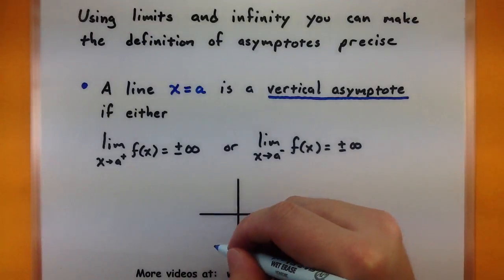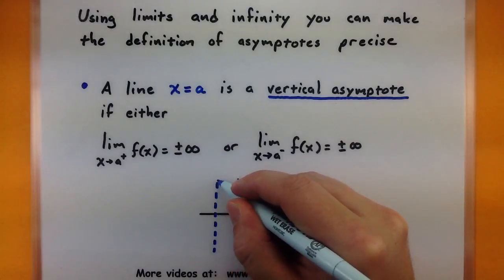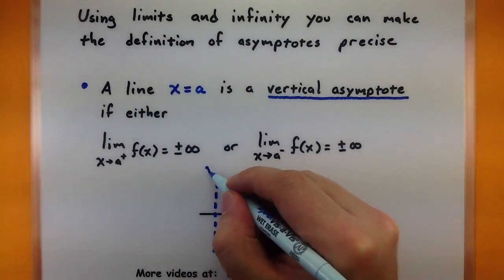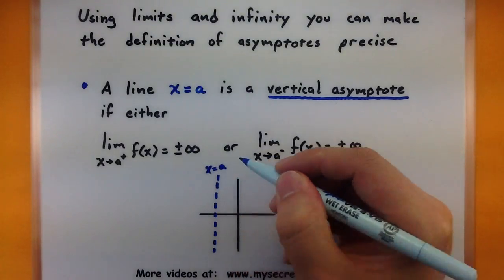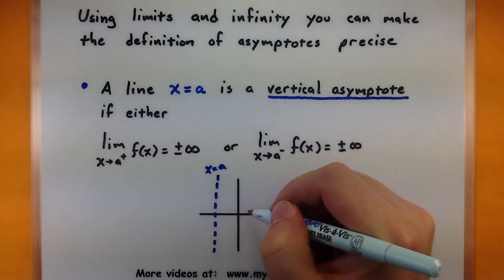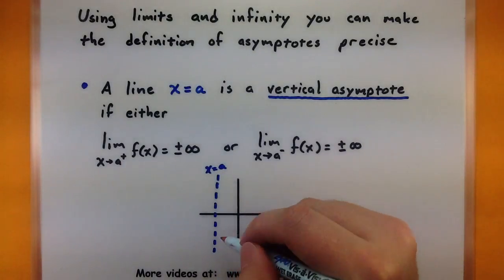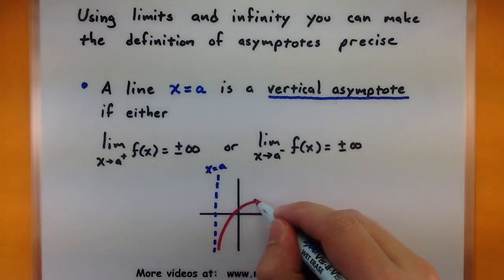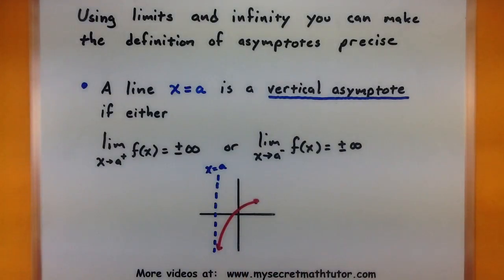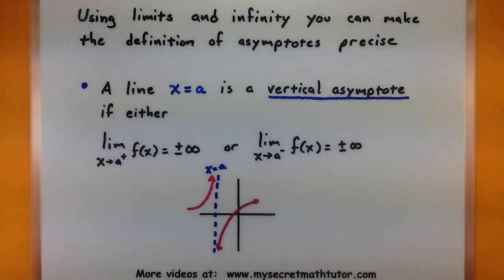So what's going on there? We have some sort of vertical line located right at x equals A. We can call that line a vertical asymptote if we're approaching A from the right and we either go to positive infinity or negative infinity, or if we approach from the left side and it goes to positive infinity or negative infinity. As long as we have one of those two cases, we can call this line a vertical asymptote.